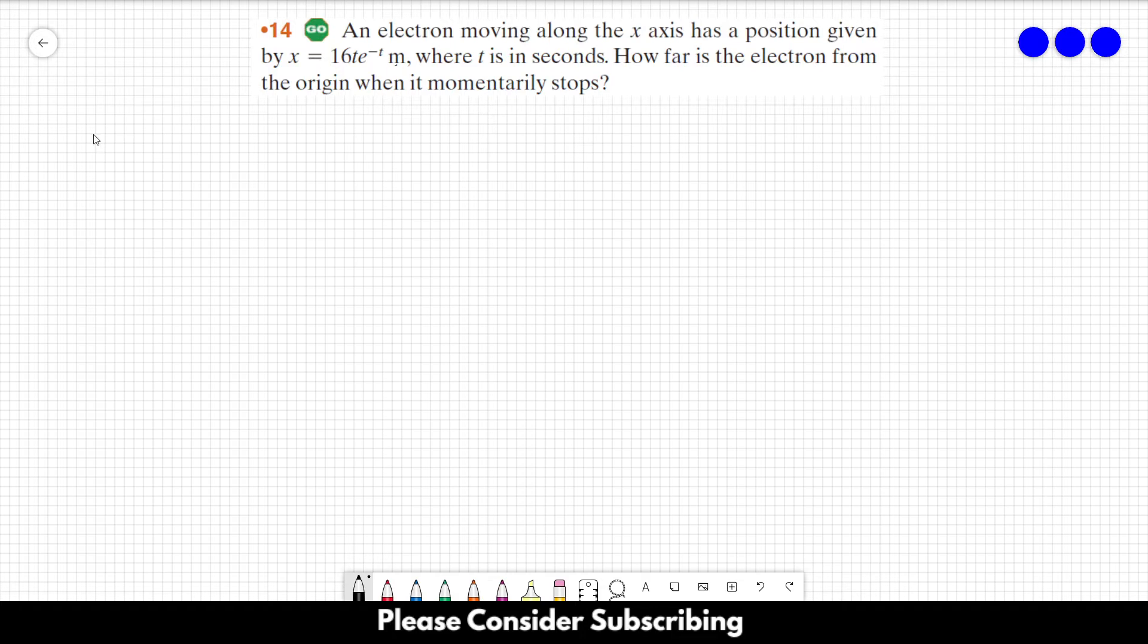So we want to find out where the electron stops, and we know that it happens when the velocity of the electron is equal to zero. So we have to find out the equation for the velocity of the electron. We just have to make the derivative of the position with respect to time. So we have to derive this equation.